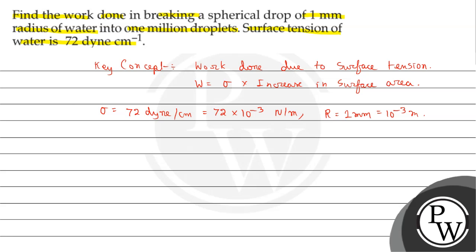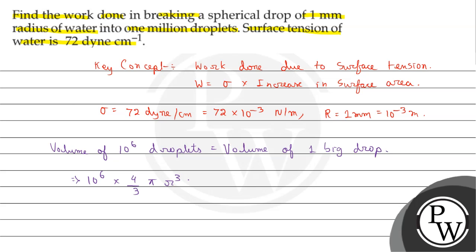Since we have 1 mm radius water droplet breaking into 1 million droplets, we use volume conservation. The volume of the big droplet equals 10 to the power 6 multiplied by 4/3 pi r cubed, where small r is the radius of the small droplets. This equals 4/3 pi capital R cubed. Solving, we get 10 to the power 6 r cubed equals R cubed, so small r equals R divided by 10 to the power 2, which gives 10 to the power minus 3 divided by 10 to the power 2, so small r equals 10 to the power minus 5 meter.